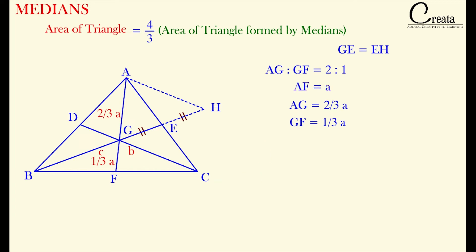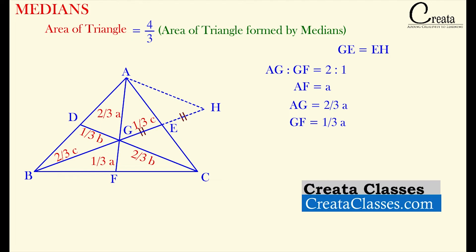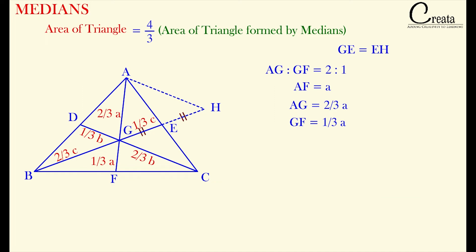Similarly, we can say DG is equal to 1 by 3 B and GC is equal to 2 by 3 B. Similarly, this is 1 by 3 C and this is 2 by 3 C. We have simply applied the fundamentals of ratio and proportion and the concept that the centroid divides the median in the ratio 2 is to 1. Further, since we have taken GE equal to EH and we know GE is equal to 1 by 3 C, it means EH will also be equal to 1 by 3 C.